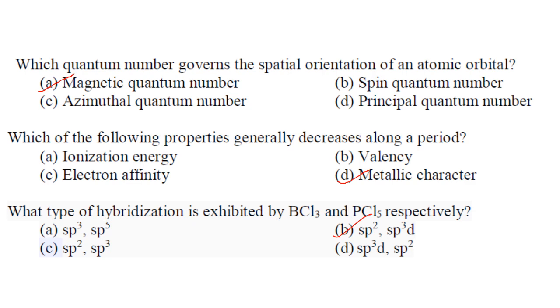Which quantum number governs the spatial orientation of an atomic orbital? It is magnetic quantum number, answer is option A. Which property generally decreases along a period? It is the metallic character that decreases along a period.